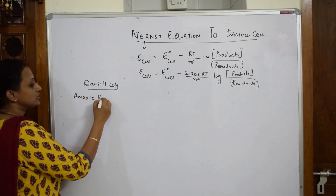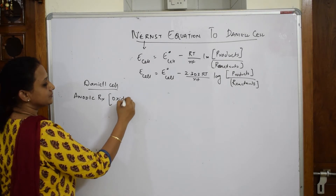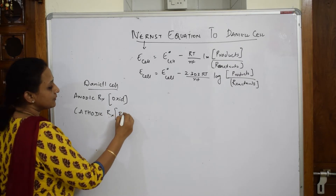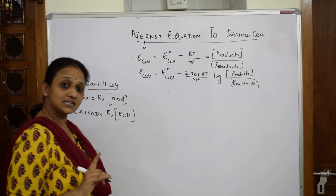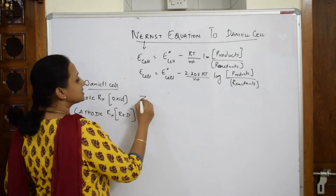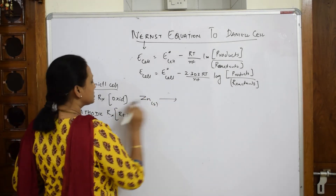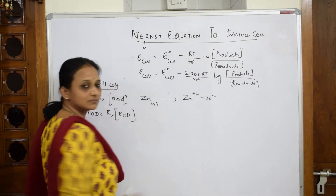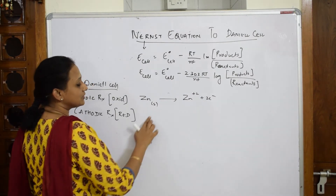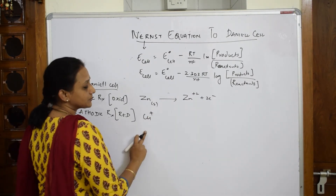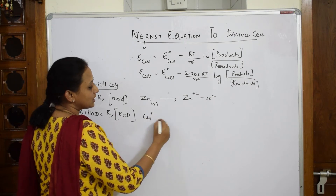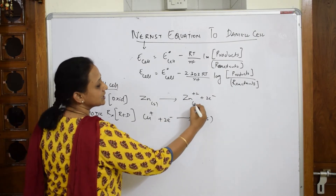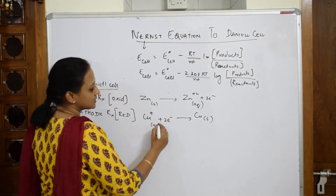In the anodic reaction, oxidation always occurs. Zinc solid loses electrons: Zn(s) → Zn²⁺ + 2e⁻. In the cathodic reaction, reduction always occurs. The two electrons travel from the anodic compartment to the copper electrode, which is deficient, so Cu²⁺ picks up those two electrons and forms copper solid.